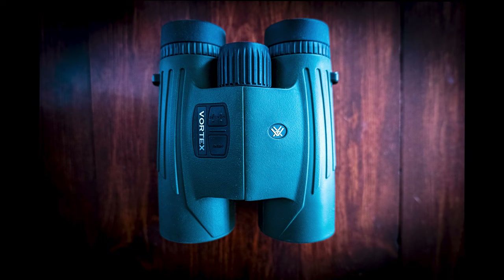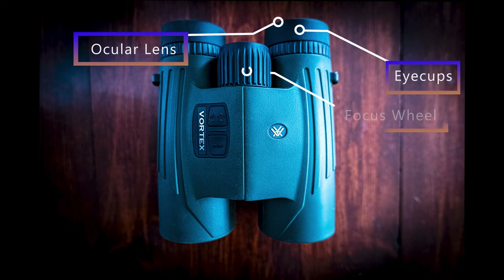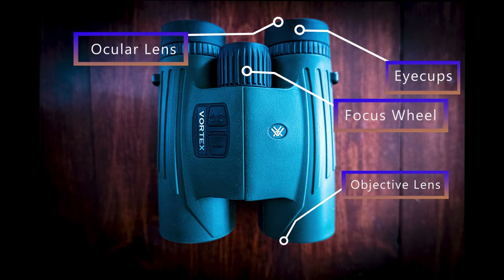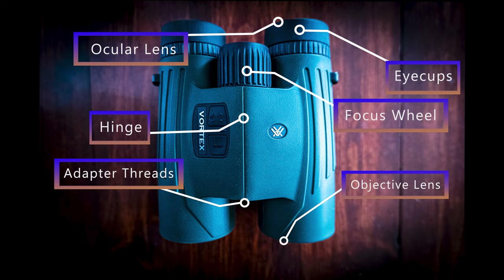Let's cover the main parts of the binocular. You have the eye cups, which usually twist out to lengthen these days — this helps with indexing for eye relief. Your ocular lenses are the ones you look into. The focus wheel is located in the center of the binocular, which will adjust focus for both barrels. The objective lenses are the ones that face away from you. The hinge connects the two barrels and holds them in proper alignment. The tripod adapter threads are located in the end of the hinge.